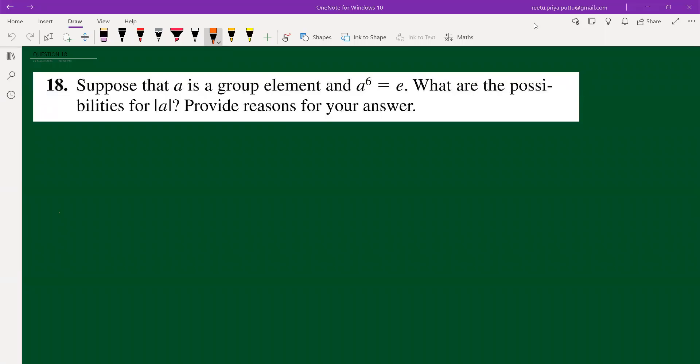Hello everyone. We are solving question number 18 from chapter 3. The question says that we have A from a group. A is a group element. We have also provided with A to the power 6 equals identity. The question is, what are the possibilities for order of A? What can be the possibilities for order of A?